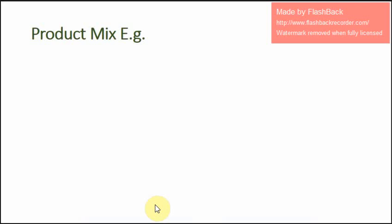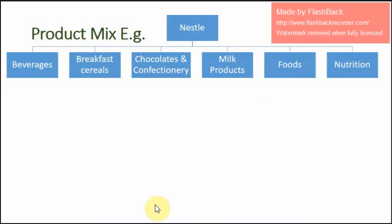This example is about Nestle. Nestle has different types of products and categorizes them into six different product lines. As you can see, these six product lines are: beverages, breakfast cereals, chocolates and confectionery, milk products, foods, and nutrition.